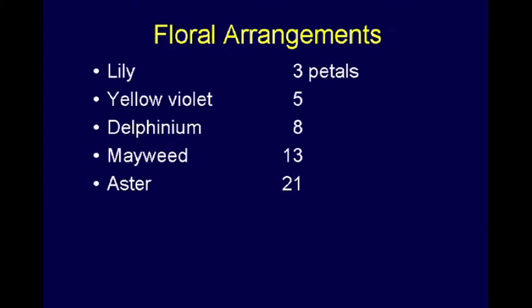In floral arrangements we discover, the lily has three petals, the yellow violet five, delphinium eight, the mayweed 13, the aster 21, berythium has 34, helenium has 55, Michaelmas daisy has 89. So if you're one of these people, she loves me, she loves me not, if you know the Fibonacci numbers you've got a chance of winning that one. All these of course are in the Fibonacci sequence.